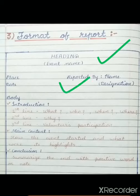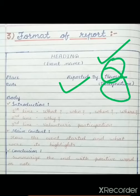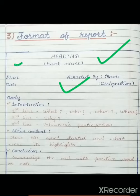Below the heading, you have to write 'Reported By' — that is, who is reporting the event — with their name and designation. Then on the left-hand side, you have to write the place and date of the particular event.